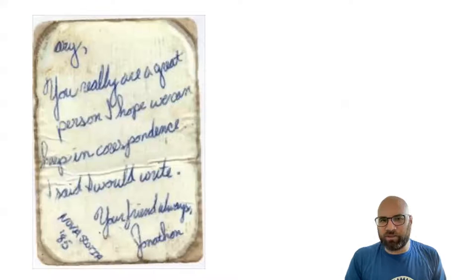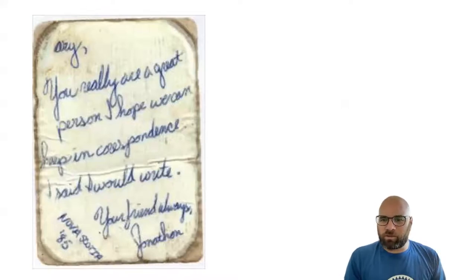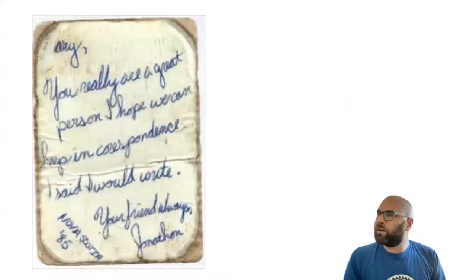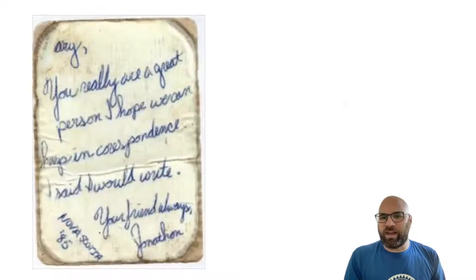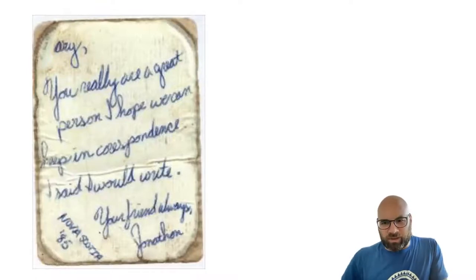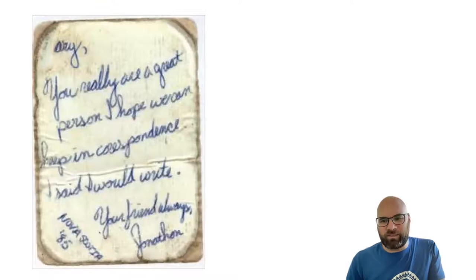Last time we talked about what this letter might mean — we brainstormed some possible explanations. One of the possibilities we thought of is that maybe Jonathan really did not want to keep in correspondence with Mary, even though that's what he wrote in the letter. So this was an example of how someone might say something that's different from what they really mean.